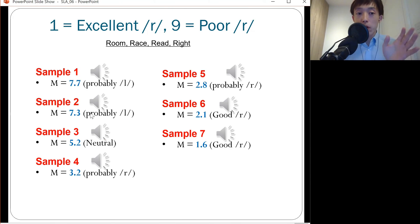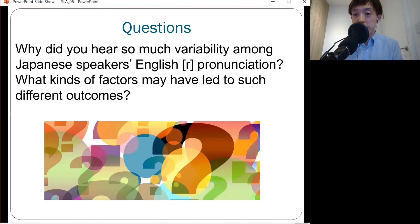In other words, why is it that participants 1, 2, and 3 pronounced English R in a much less native-like, target-like manner than participants 5, 6, and 7 did? What kinds of factors may have affected the outcomes of their English R pronunciation in the end?